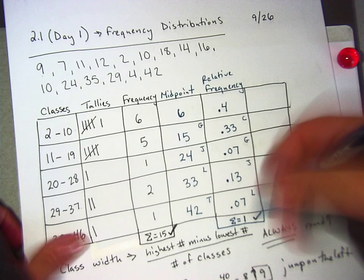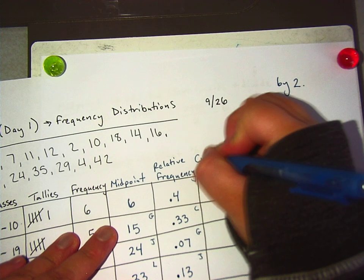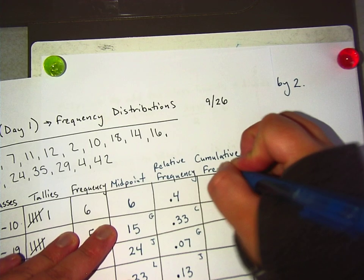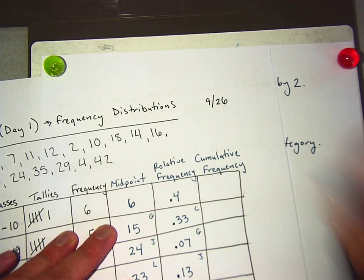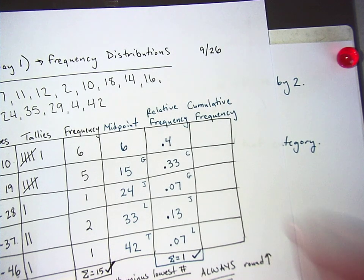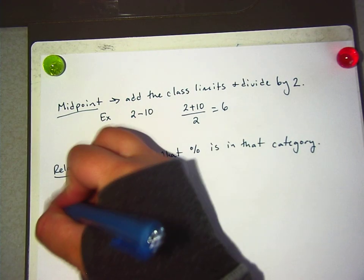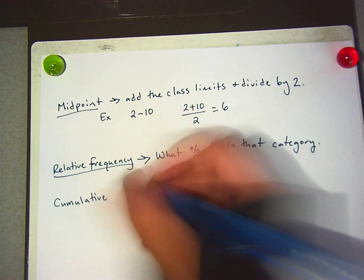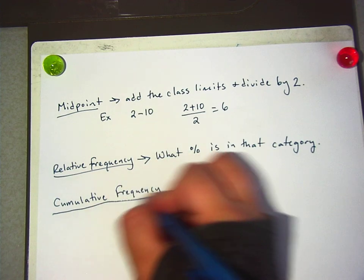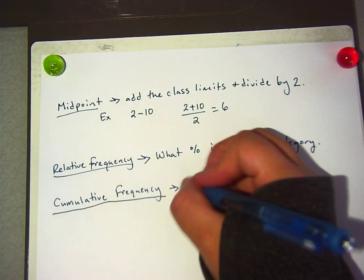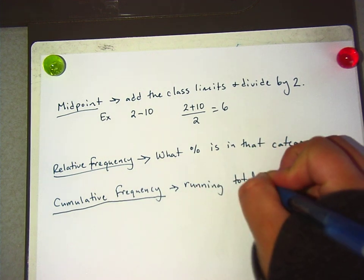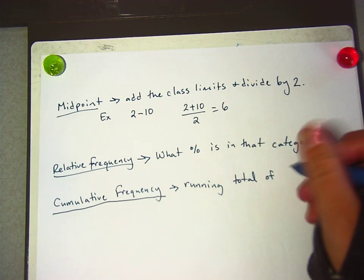All right, last one is called cumulative frequency. Okay. Cumulative frequency, which I'll write on the next page. Cumulative frequency is a running total of the classes.